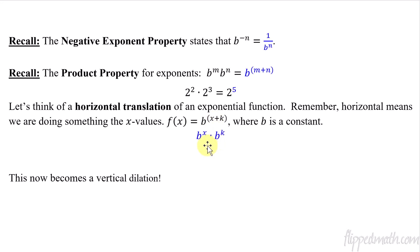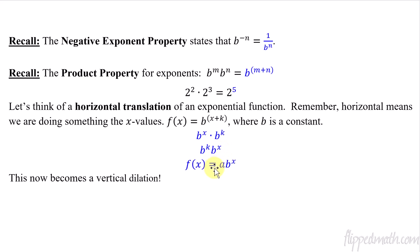Let's do a little algebra here. b to the x plus k is the same as b to the x times b to the k — that's applying the product property of exponents. Now, b to the k is just some constant number, so I can switch them around since multiplication order doesn't matter. That shows that b to the k is just some new constant, like the coefficient a. So if I shift b to the x left or right, that's the same thing as multiplying by some new value a.